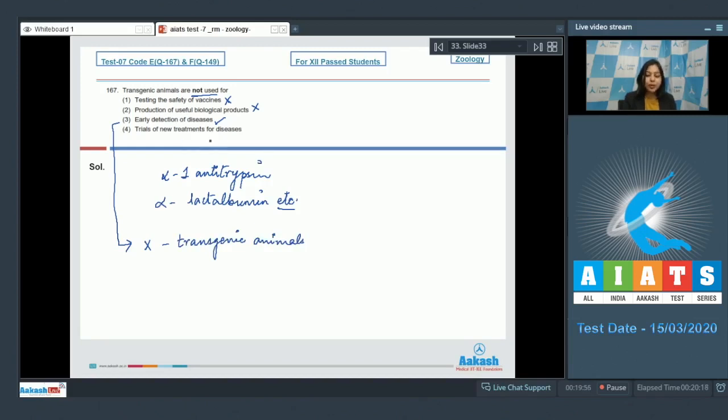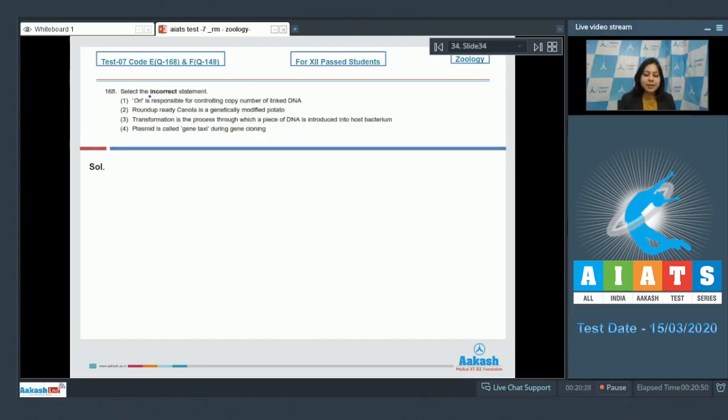Number four, trials of new treatments for diseases. This is also incorrect as trials of new medicines and new treatments have been done on genetically modified animals. The correct answer here becomes option number three. Moving on to the next question, question number 168.